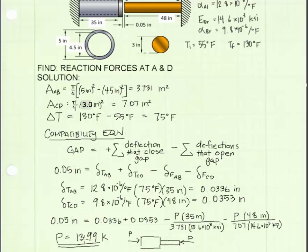Solving the equation, I get P is equal to 13.99 kips, and P is the reaction at both A and D. And we're done.